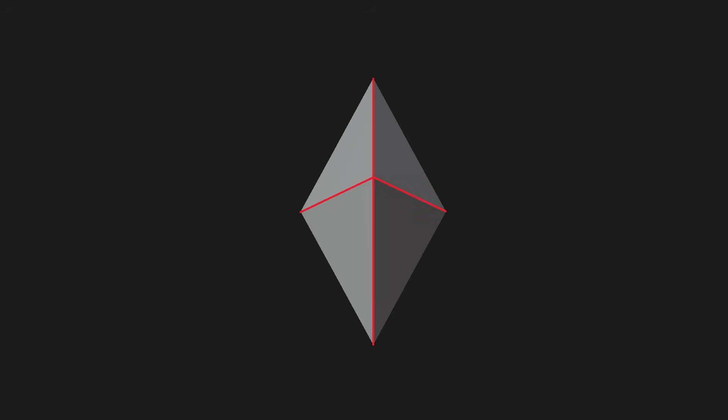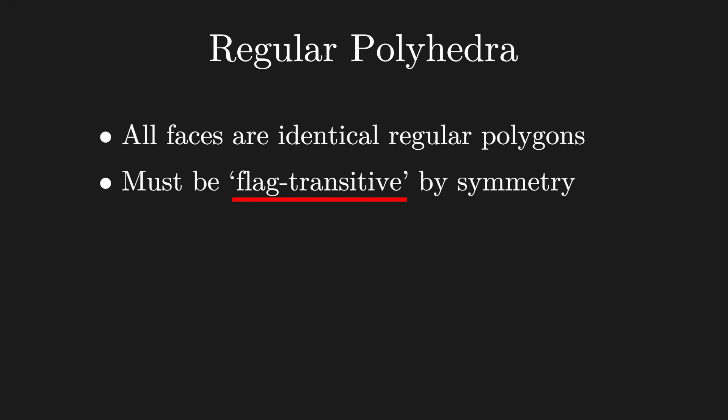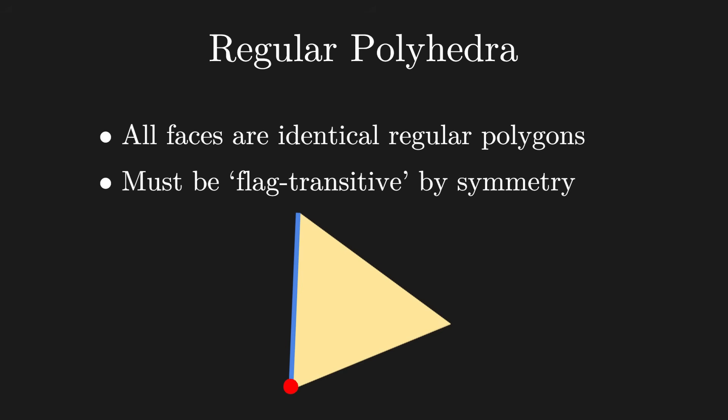Like, here four triangles meet at a vertex, but here only three triangles meet. The more rigorous way to say it is that the shape has to be flag transitive. That is, every connected vertex, edge, and face should be identical to any other one by symmetry.